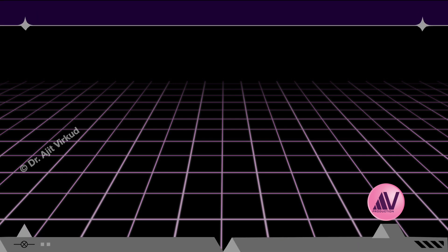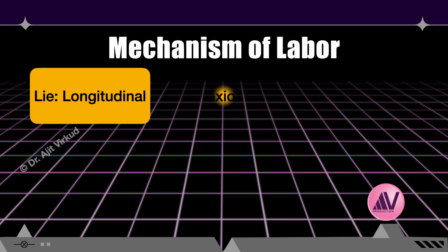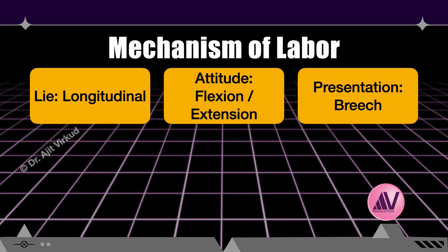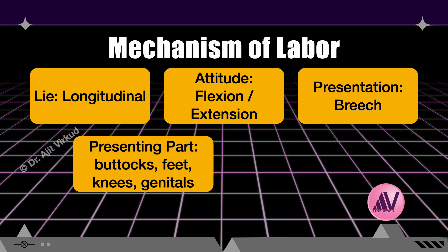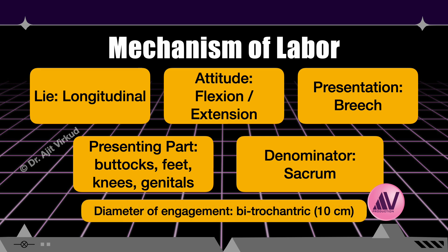The description is as follows. Lie is longitudinal. Attitude is flexion or extension depending on whether it is complete or incomplete breech. Presentation is the podalic pole. Presenting parts could be buttocks, genital organs, and feet in complete breech, or only buttocks, or one or both feet or knees in incomplete breech. Denominator is the sacrum. The diameter of engagement in breech presentation is bitrochanteric, which is 10 cm. The various positions of breech as described in cephalic presentations are not discussed here as they are irrelevant in breech.